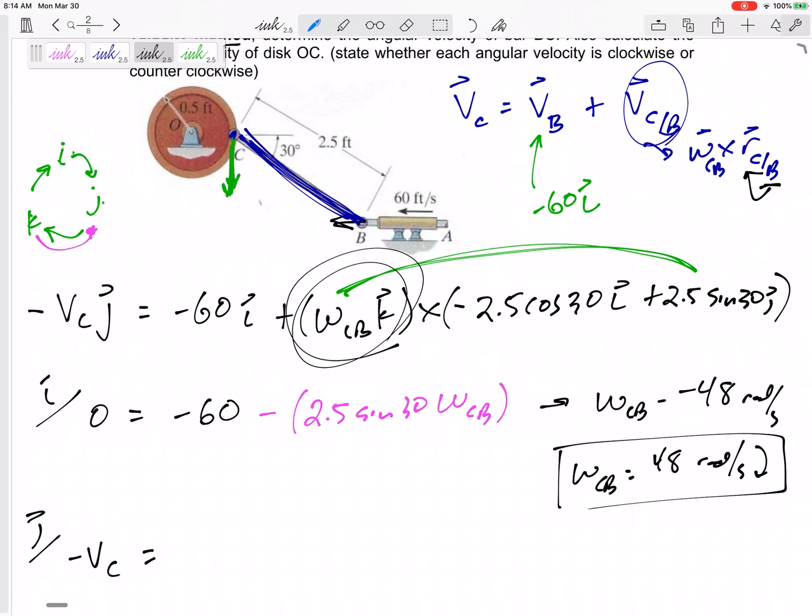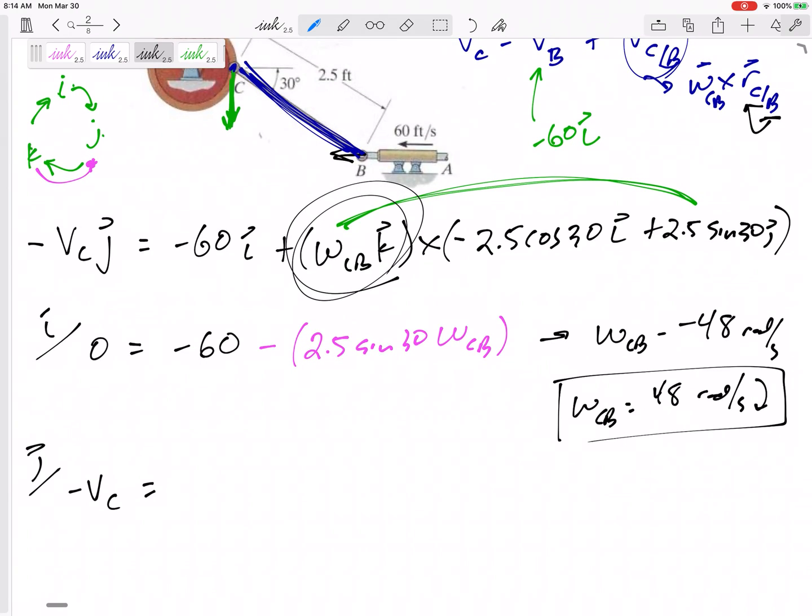Then my J, negative VC equals, all right, which one of these is going to show up in my J? This one right here. All right. Now, I'm going to go ahead and do 2.5 cosine 30 omega CB. And K cross I would be positive J. But there's a negative right here. So, that's negative. All right. But here I'm going to plug in another negative 48 right here.